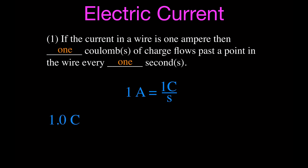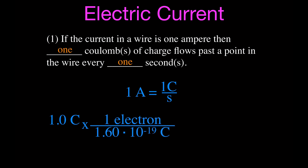We can also calculate how many electrons are in one coulomb, because we know each electron has a charge of 1.6 times 10 to the minus 19 coulombs. We take one coulomb and divide by the charge on an electron, and we get that one coulomb of charge is equal to 6.25 times 10 to the 18 electrons flowing past a point. So when this many electrons flow past a point in a wire, you have a current of 1 ampere.